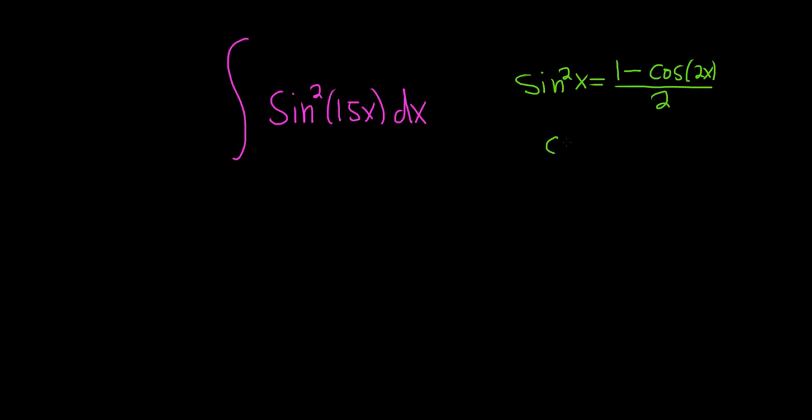The other identity that's really useful, just for general knowledge, is cosine squared x, and this one is the same except it has a plus: 1 plus cosine 2x over 2. The way I memorize it is that cosine has the plus. So I memorize this one first, and then I know that sine has the minus.